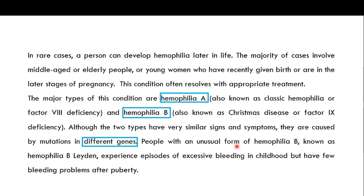Although hemophilia A and B have very similar signs and symptoms, they are caused by mutations in different genes. People with an unusual form called hemophilia B Leyden experience episodes of excessive bleeding in childhood but have few bleeding problems after puberty.